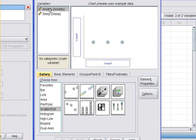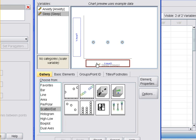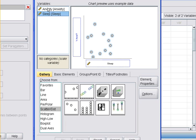Let's say I want to predict anxiety based upon sleep. So sleep is going to be my predictor, and anxiety is going to be my criterion. Then I'll go ahead and click okay.